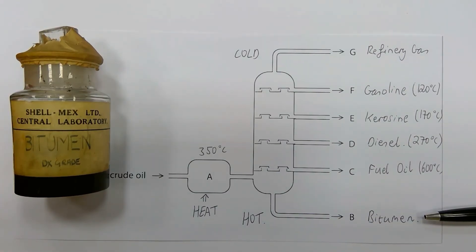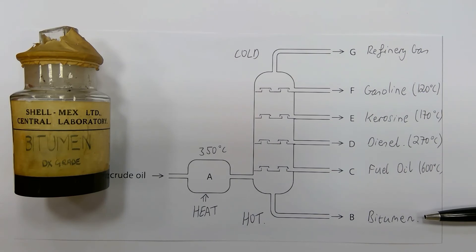The next fraction is called bitumen, also known as asphalt. This is a sticky, black and extremely viscous liquid. The primary use — 70% of bitumen — is in road construction, where it is used as the glue or binder that holds gravel together. It is also used in the production of roofing felt and for sealing flat roofs. Bitumen is a mixture of hydrocarbons with over 70 carbon atoms per molecule and has a very high boiling point.